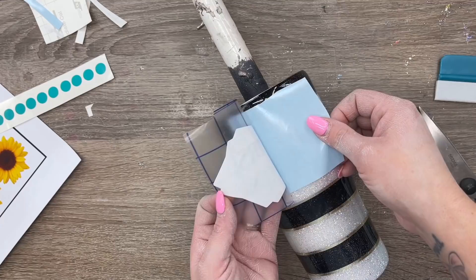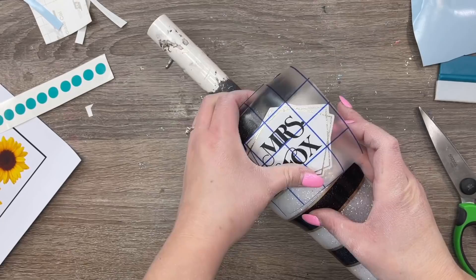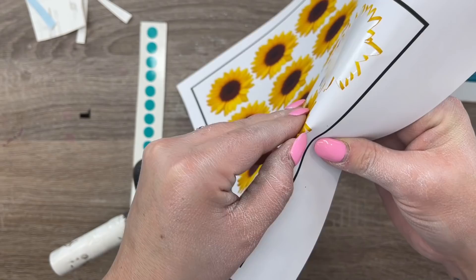I'm going to start by placing the sunflowers on my cup just like I would peel and stick a sticker. You don't want to use transfer tape on that printable vinyl because it's really easy to mess it up.